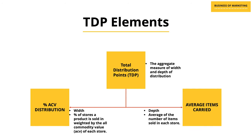There are primarily two elements to TDP. On one side, percentage ACV distribution gives the width — that is, how many stores the product is being sold in, weighted by the average commodity value or ACV of each store. On the other side, average items carried gives the depth of distribution, which is the average number of items sold in each store.